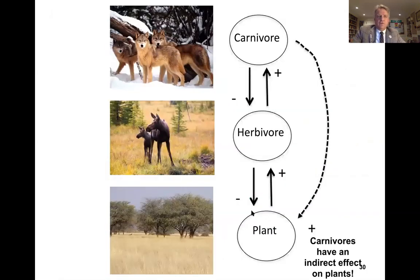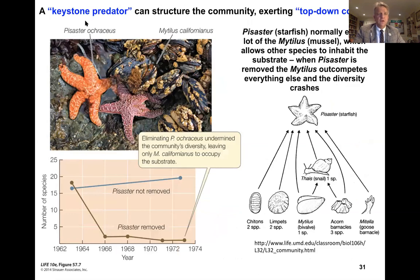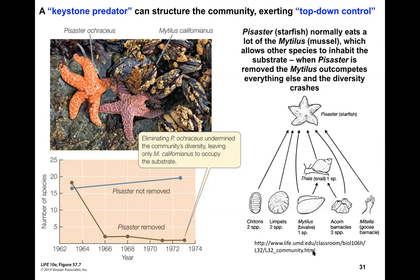Carnivores can have an indirect effect on plants — by controlling herbivore populations, they can then have an indirect effect on plant populations. This idea of organisms being critical to the dynamics of other organisms in the community is nicely illustrated through the concept of the keystone predator.